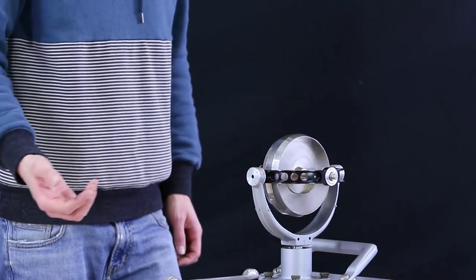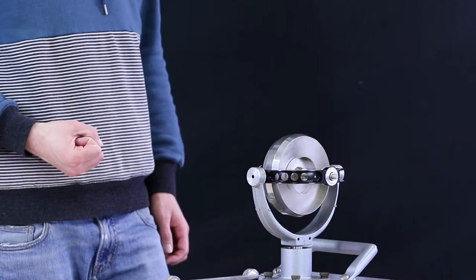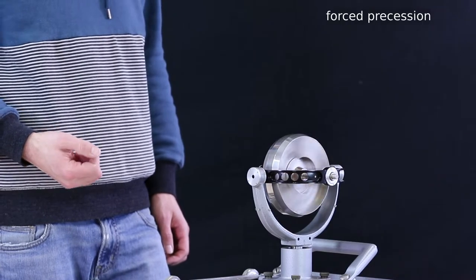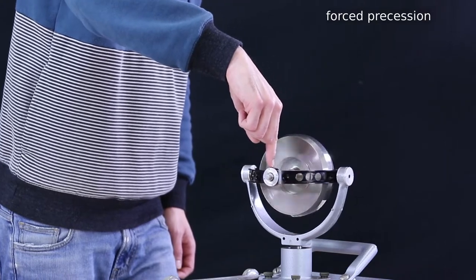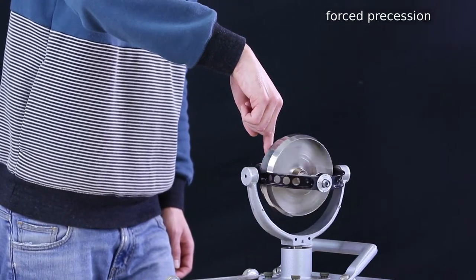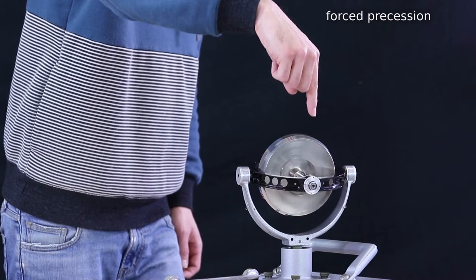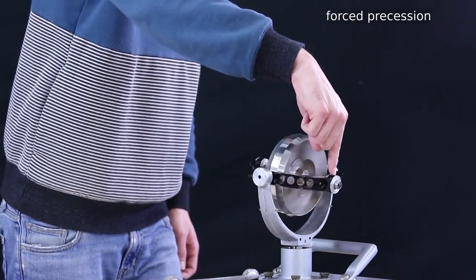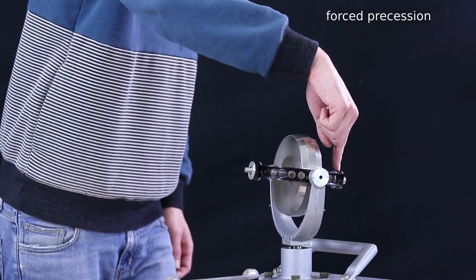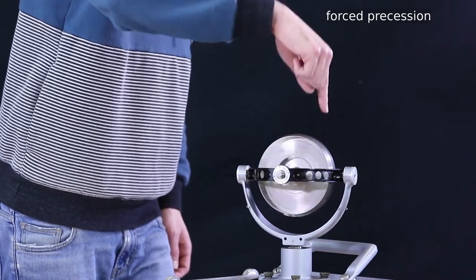When applying external torques, we can observe forced precision. So, I'm applying a torque on this axis and the gyroscope is moving perpendicular to it.